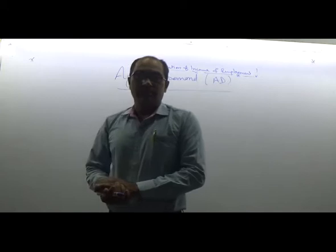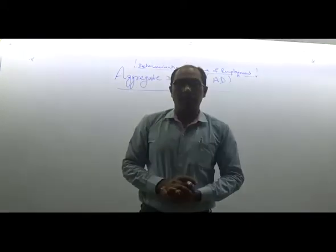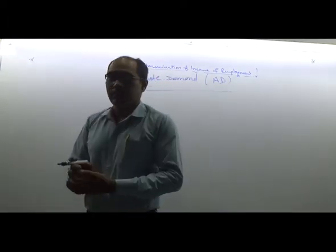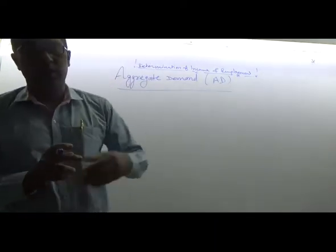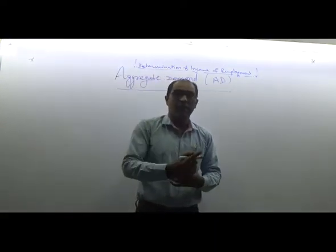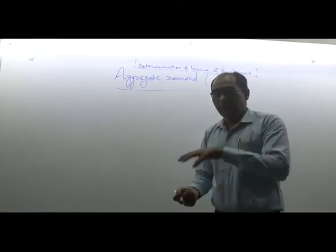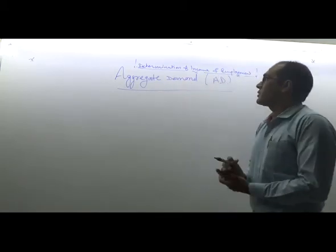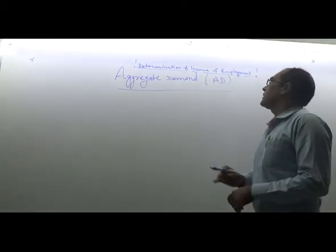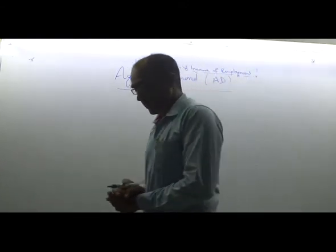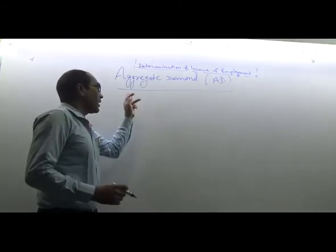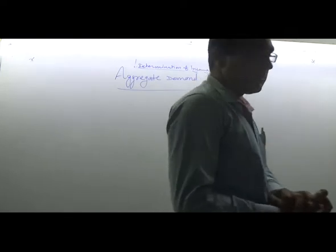Good morning everybody. Today we have to start our third unit. The first unit was national income and related aggregates, the second unit was money and banking — we already finished those. So today we have to start the topic: determination of income and employment. In the third unit, your first sub-topic should be aggregate demand.